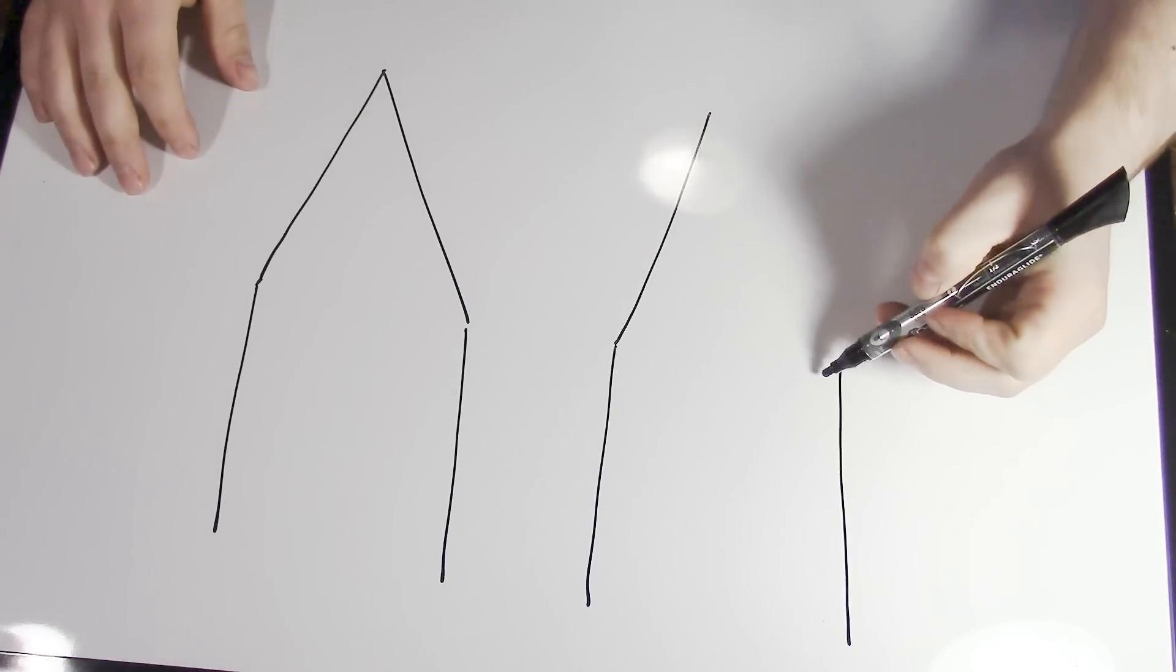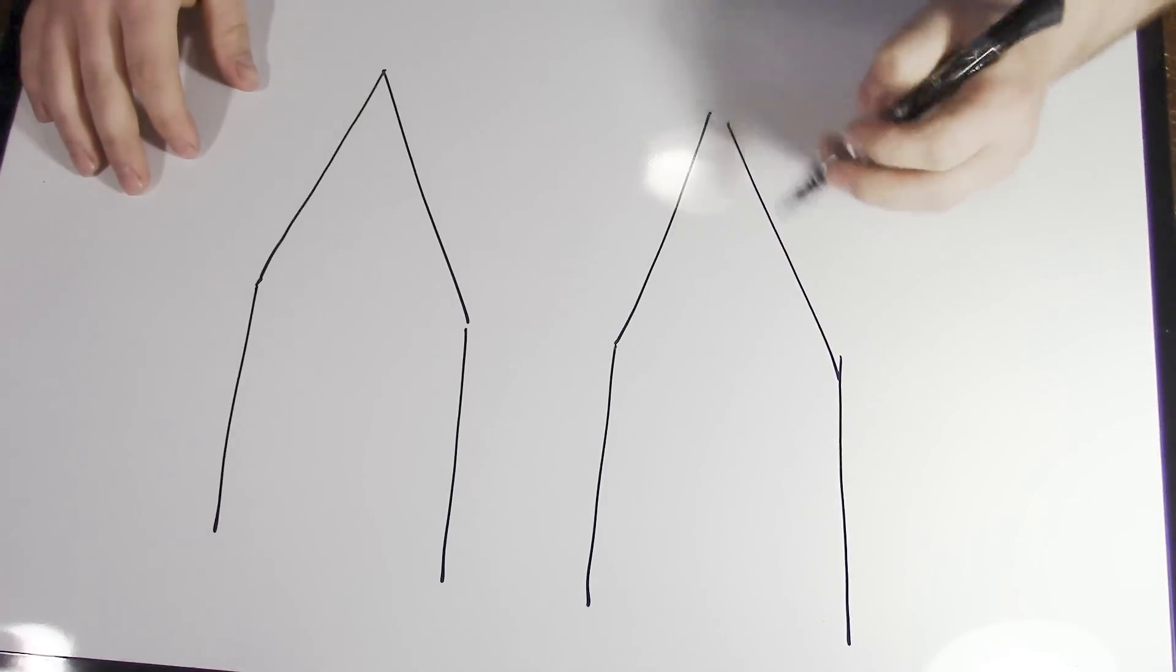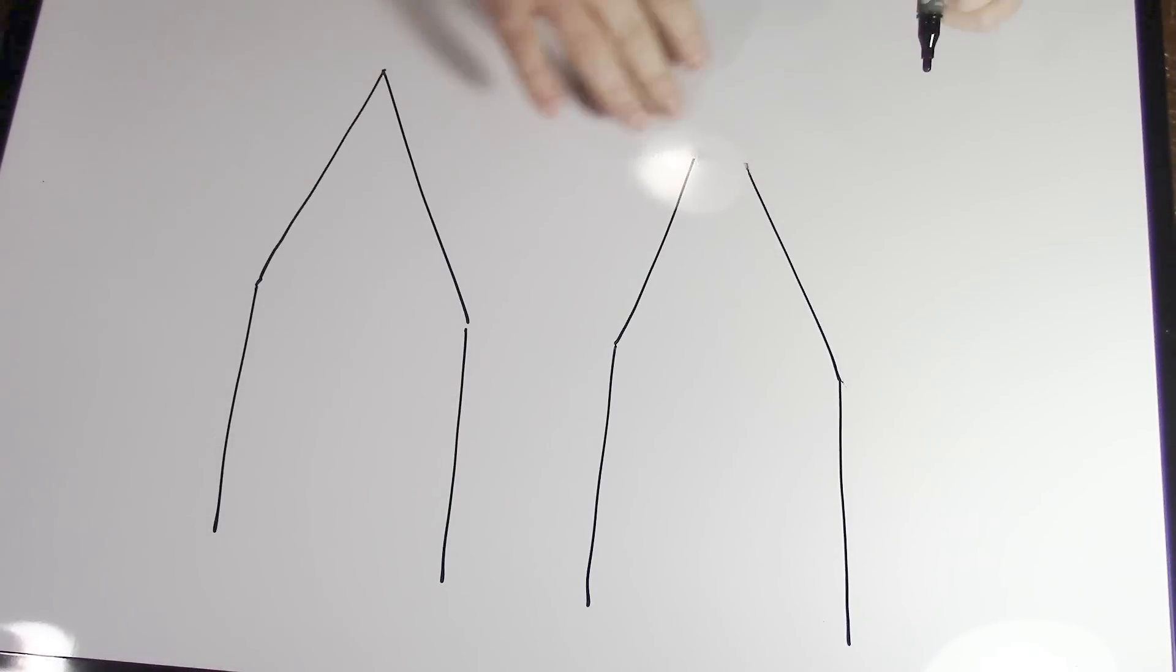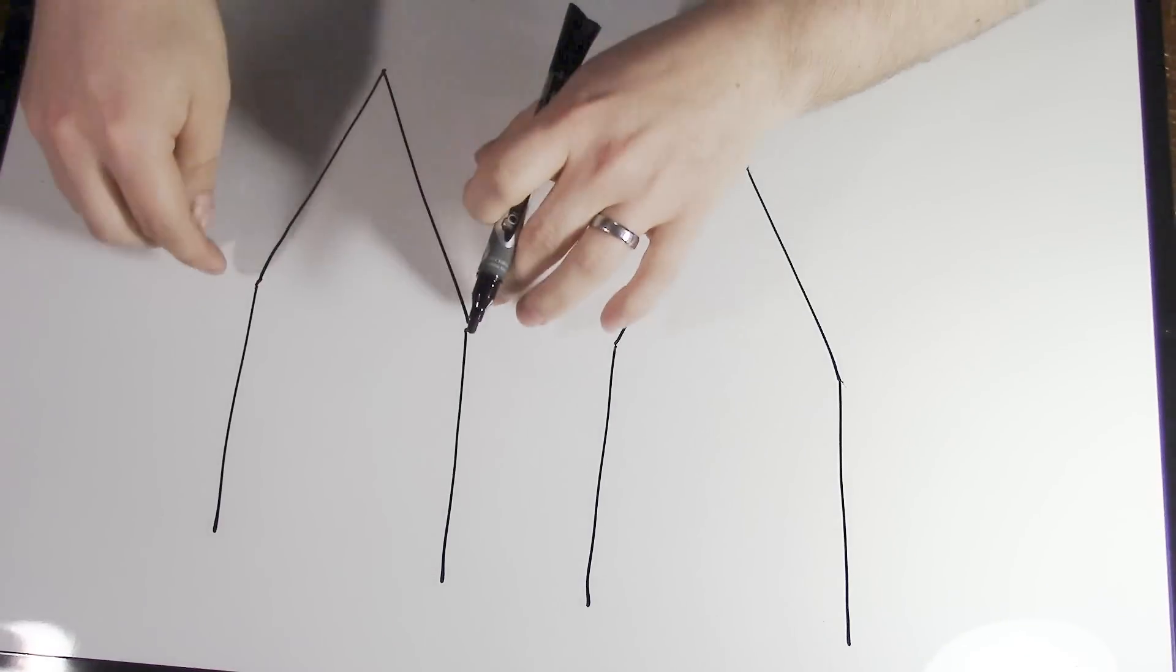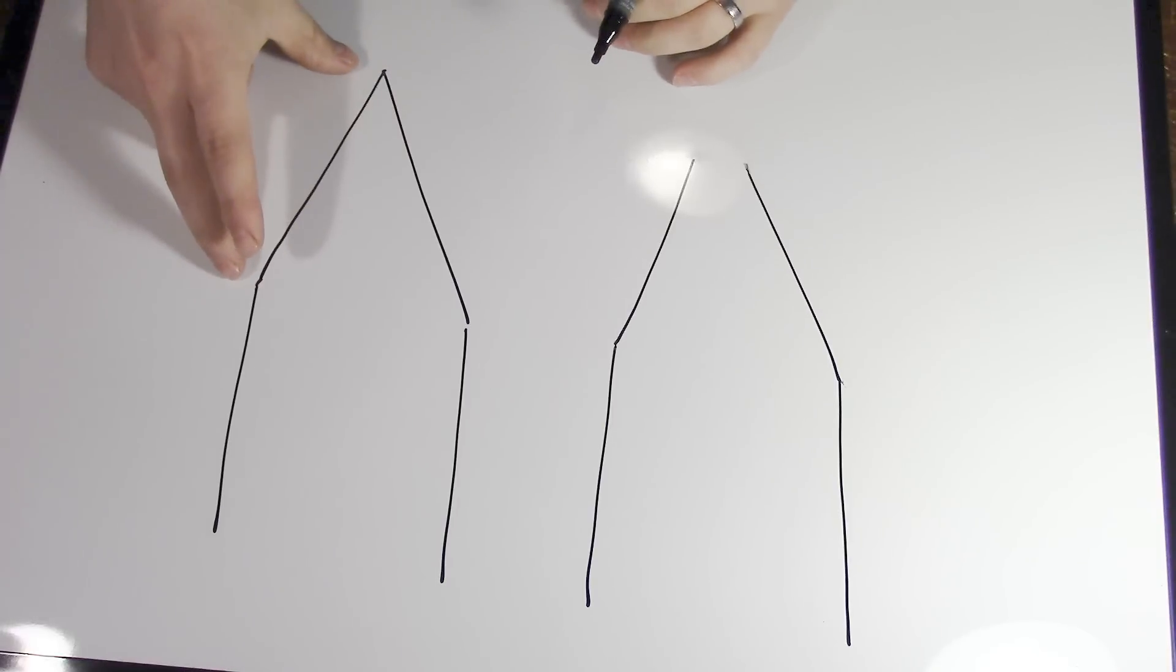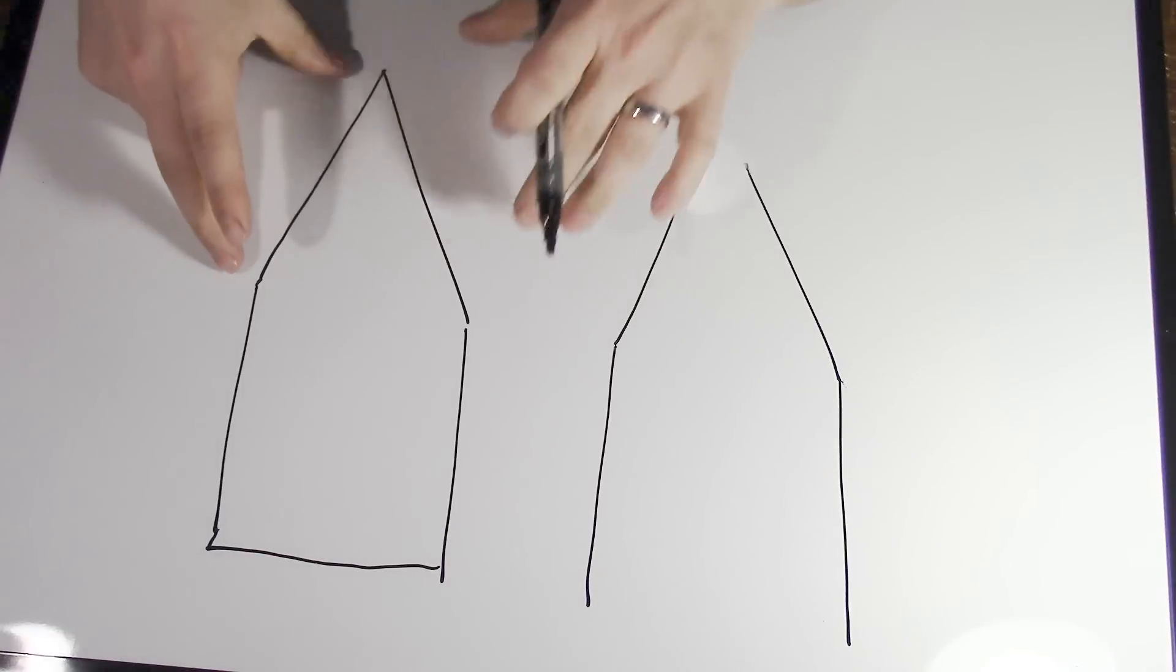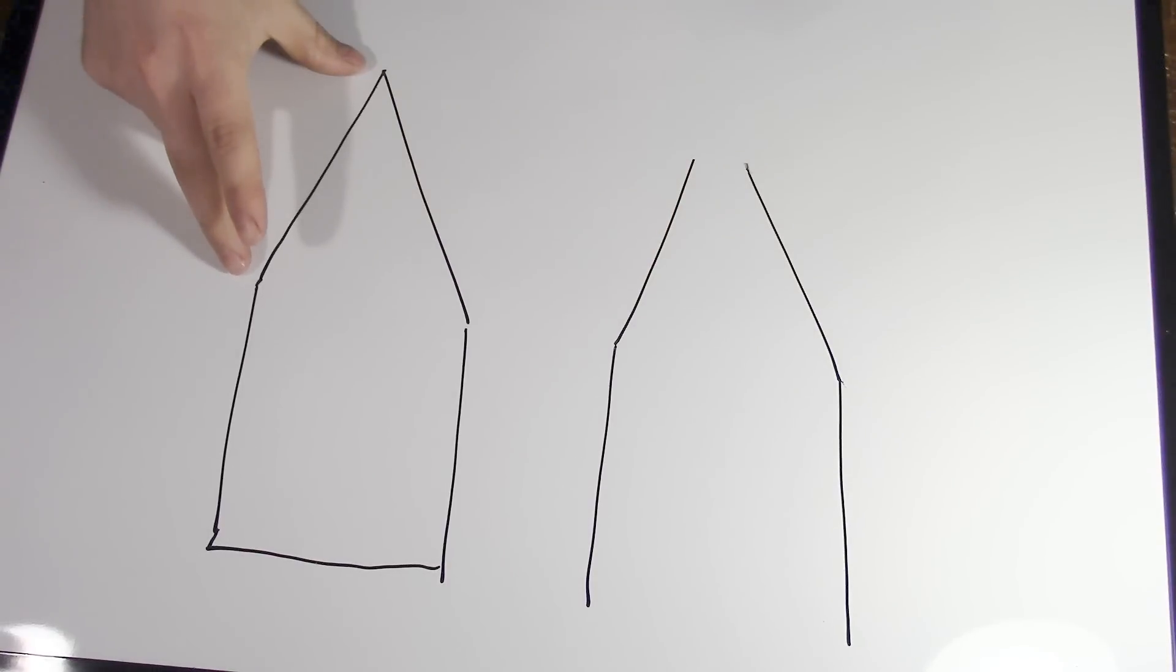Now the difference between a Scandi and a Sabre is that a true Scandi runs all the way to the edge, one single perfectly flat plane right to an edge. This bevel might be, if you're looking at the scale, three quarters or an inch long.